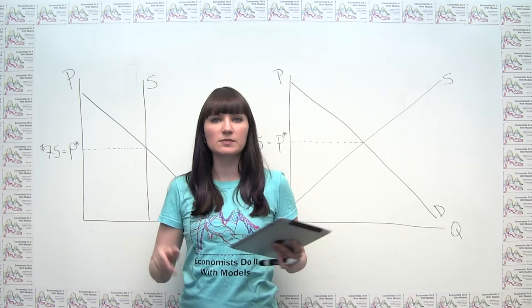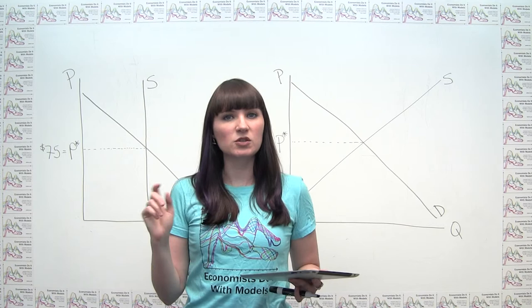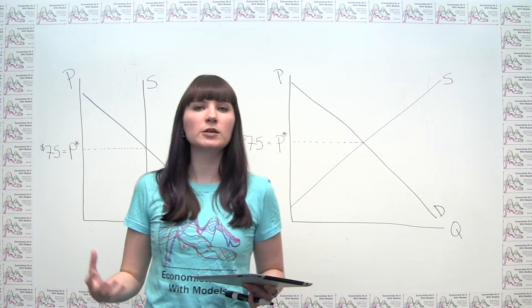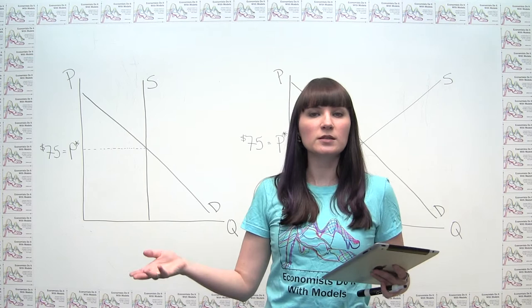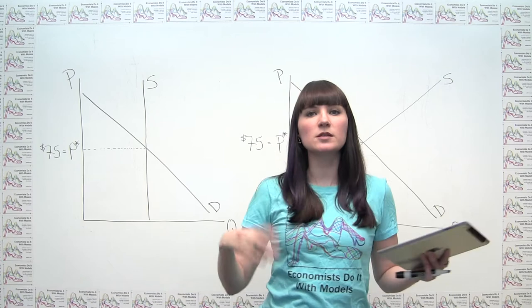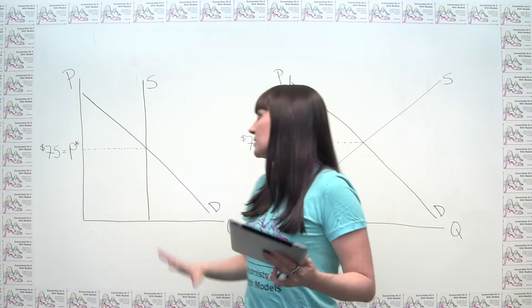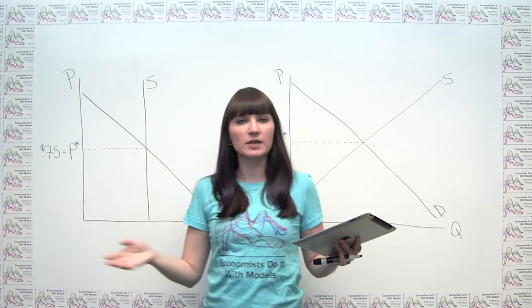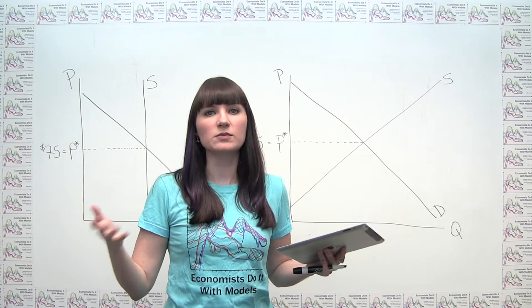So we can model that using a supply and demand diagram. And to be fair, I've taken a few liberties in coming up with some supply and demand diagrams here, mostly because if we're talking about a particular music superstar, we're not really talking about a competitive market. A competitive market is a market where there are a bunch of small suppliers basically selling identical products.